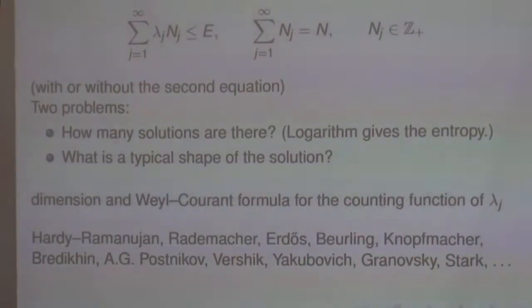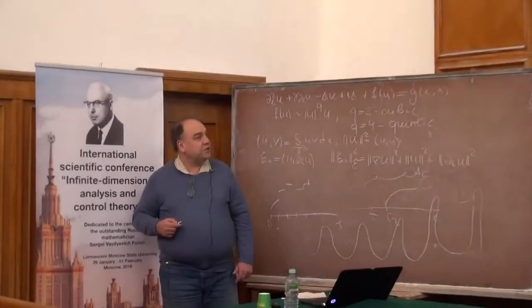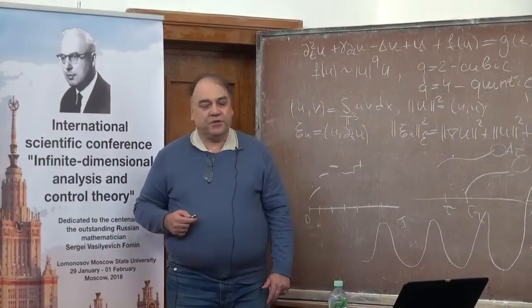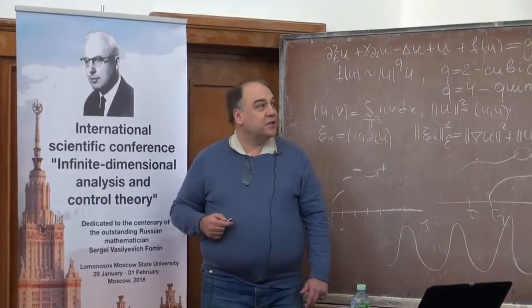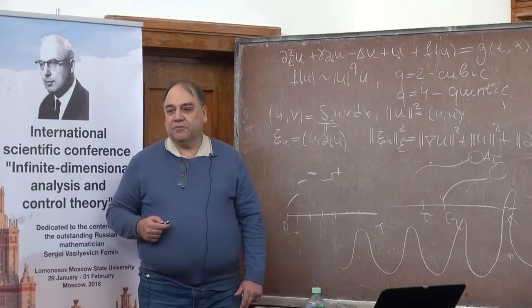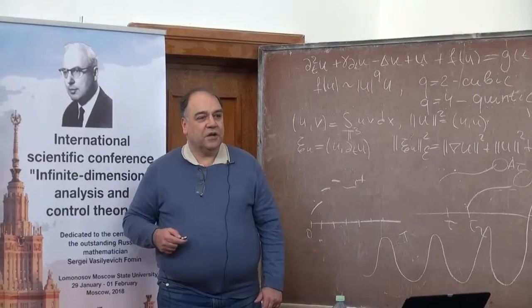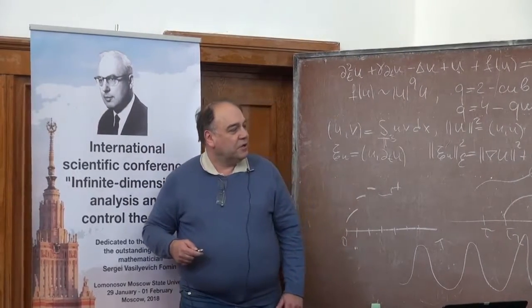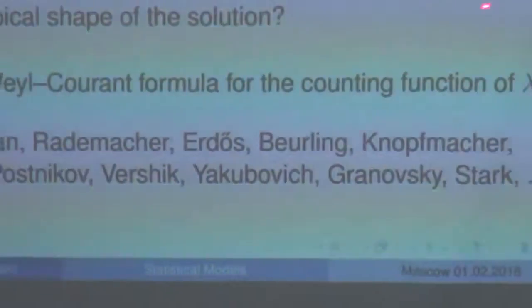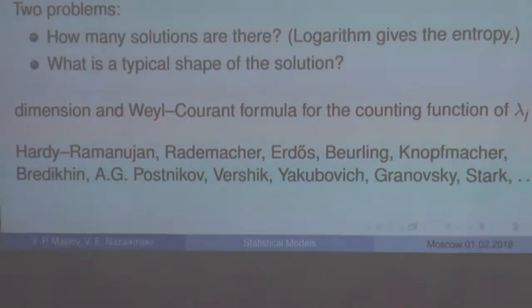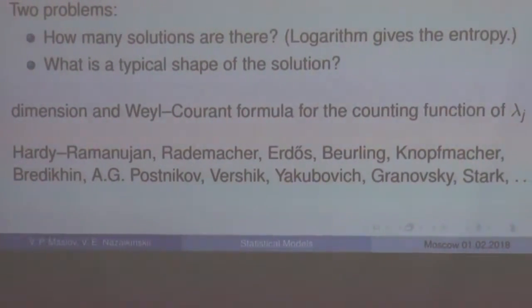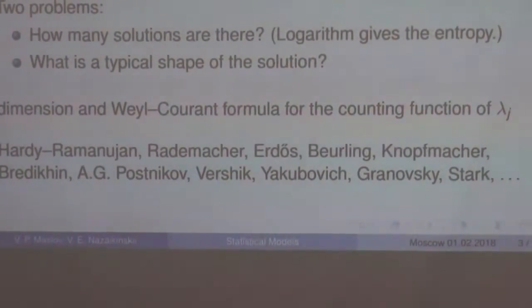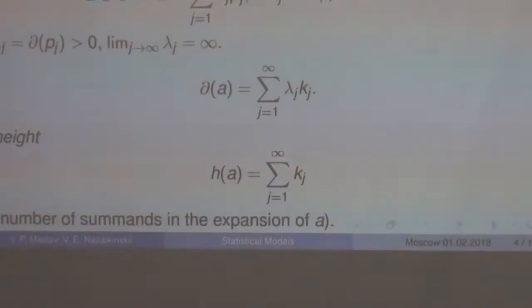While classical number theory deals with the case where these lambda j are integers, in physics there is generally no reason to assume that these lambda j are integers. So one deals with some generalization. This generalization is known under various names: Beurling numbers or abstract analytic number theory. Knopfmacher developed some theory, or just analytic number theory on arithmetic of commutative semigroups, which was studied by others.